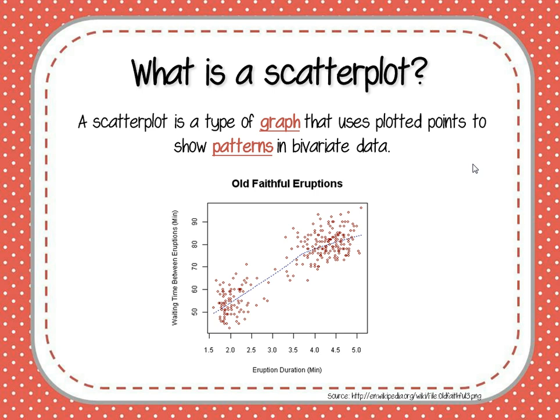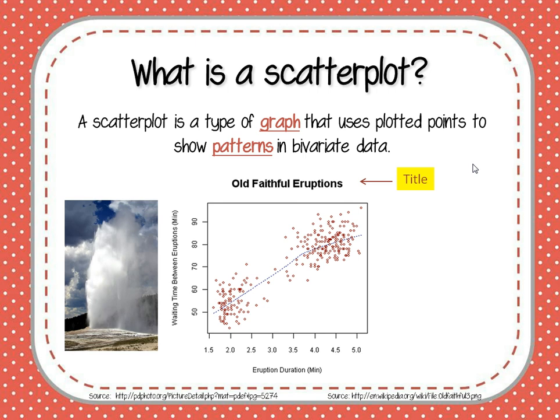Here's our example of a scatterplot. Any time you find a scatterplot, you're going to do the same thing you do when you look at any graph, which is you're going to check out the title. That might seem really obvious, but a lot of people miss that part. So we're actually looking at Old Faithful eruptions. If you're not familiar with Old Faithful, it's a geyser in Wyoming in Yellowstone National Park, and it gets its name because it is very faithful in the way that it erupts — it's very reliable and predictable.